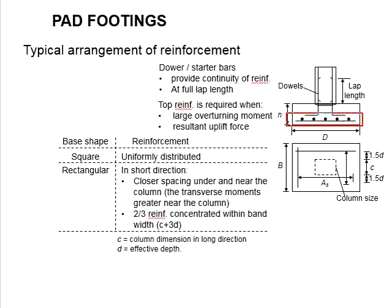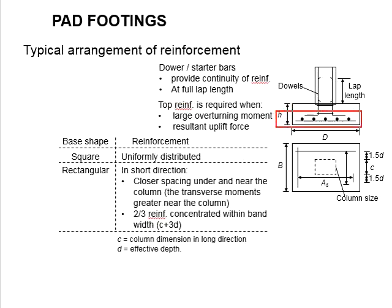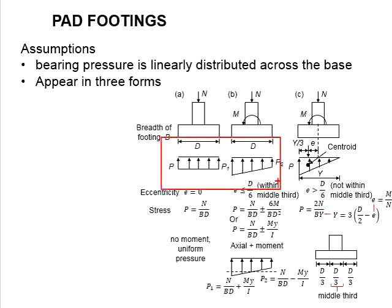Depending on the directions of the reinforcement bar, the longitudinal reinforcement bar has a higher effective depth in comparison to the transverse reinforcement bar. The difference between the depth of the longitudinal and the transverse reinforcement is defined by the summation of half of the bar size longitudinal and half of the bar size transverse. The reinforcement bars are normally used to withstand the bending force caused by the bearing pressure generated by the soil.